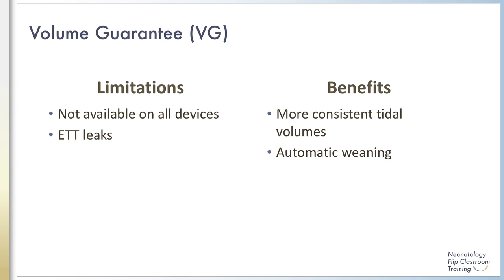Volume guarantee is not available on all ventilator devices. In addition, some devices with the volume guarantee mode do not have the capabilities of measuring the true tidal volume with large endotracheal tube leaks. These infants may require re-intubation with a larger endotracheal tube to reduce leak, or conversion to a pressure control mode of ventilation. However, some devices are able to compensate for large ET tube leaks of up to 75–80%.